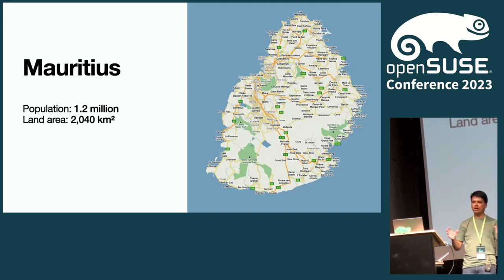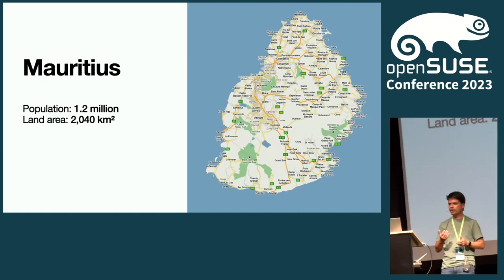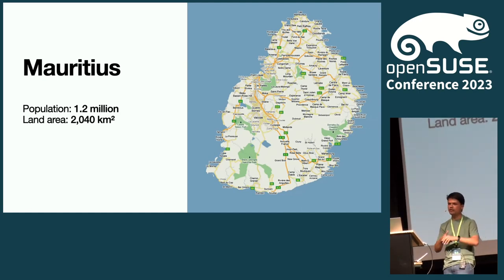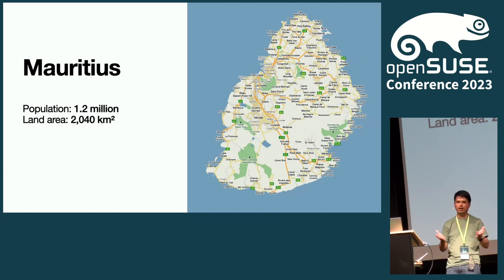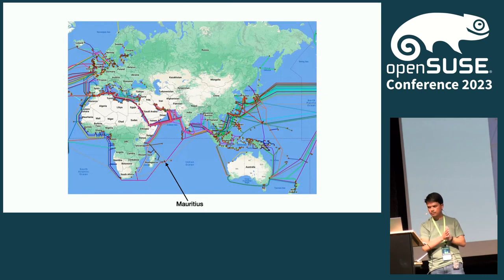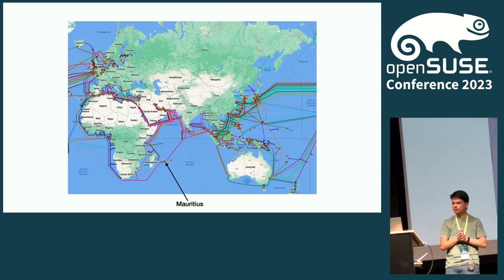If you compare it to Germany — I think it's above 80 or 85 million people, land area of 350,000 square kilometers. So where exactly is Mauritius on the world map? Here.